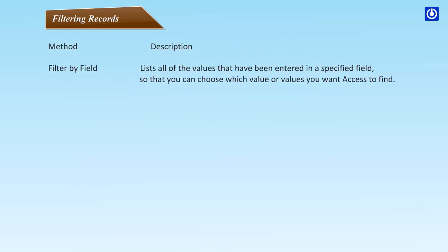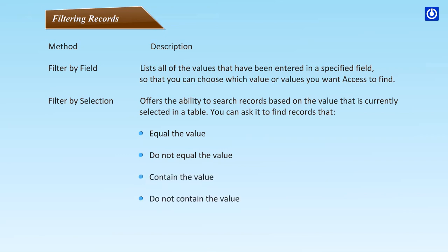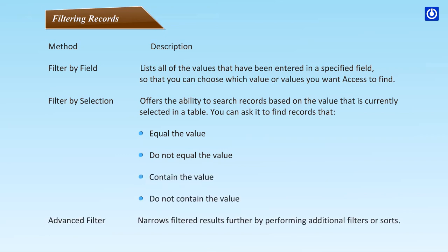Filter Methods: Filter by Field lists all values entered in a specified field so you can choose which values you want Access to find. Filter by Selection offers the ability to search records based on the value currently selected in a table — you can find records that equal, do not equal, contain, or do not contain the value. Advanced Filter narrows filtered results further by performing additional filters or sorts.